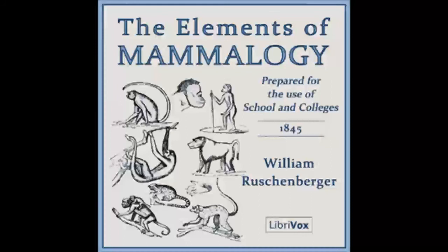I will suppose that the animal in question is an eagle. I find at first that it has a skeleton, and hence I know that it belongs to the branch of vertebrata, and it is not necessary to compare it with the animals of other branches. I next look for the characters which distinguish the different classes of vertebrata from each other, and when it is determined that it is an animal of the class of birds, I exclude from the comparison all the mammalia, all the reptiles, and all the fishes. I next inquire whether it presents the characters proper to this or that order of the class of birds, this or that family, and when I have ascertained the genus to which it belongs, I have only to compare it with a very small number of animals, from which it differs only in some few not very important particulars.